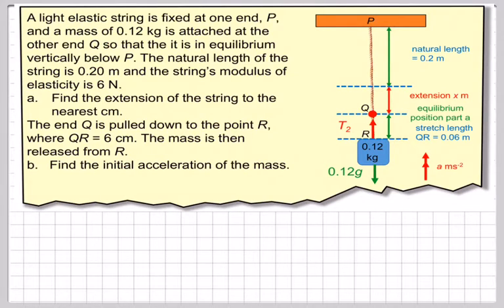So the question is, a light elastic string is fixed at one end, P, and a mass of 0.12 is attached at the other end, Q, so that it's in equilibrium vertically below P. The natural length of the string is 0.2 meters or 20 centimeters, and the string's modulus of elasticity is going to be 6 newtons. Find the extension of the string to the nearest centimeter, so we're going to have to calculate the value of that distance there.